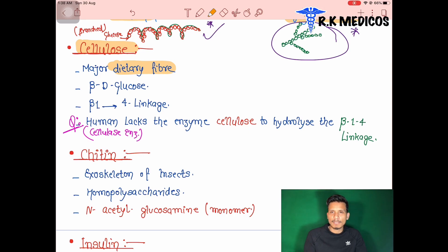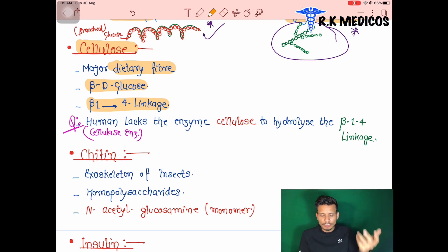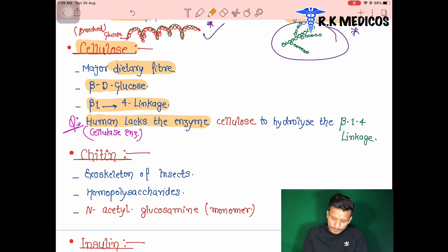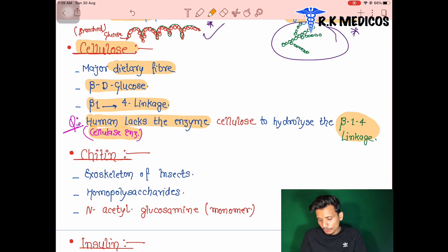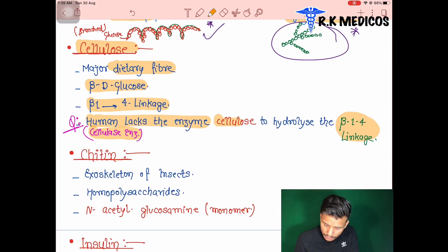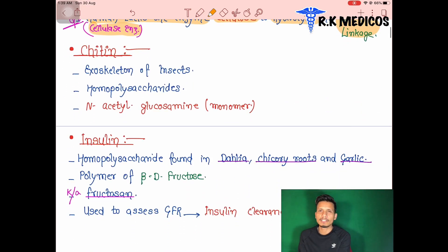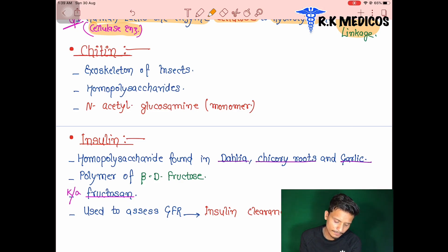Cellulose is a major dietary fiber — a roughage — and its monomer is beta-D-glucose. The linkage between units is beta-1,4 glycosidic linkage. Humans lack the enzyme cellulase, which is needed to hydrolyze the beta-1,4 linkage, so we cannot digest cellulose or plant cell wall structures.